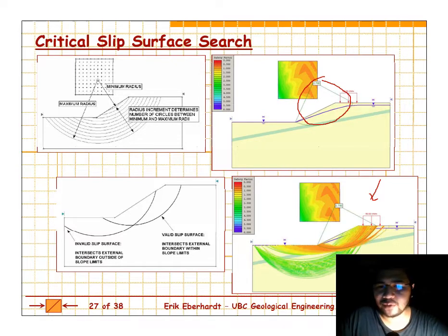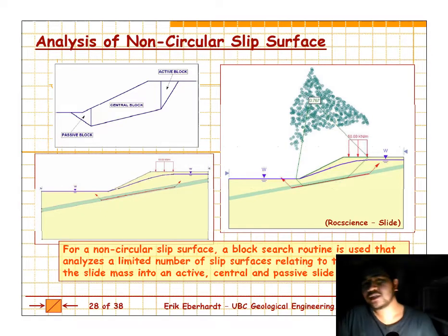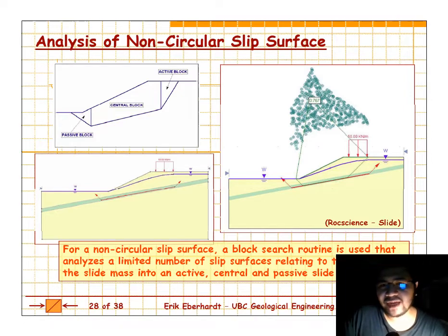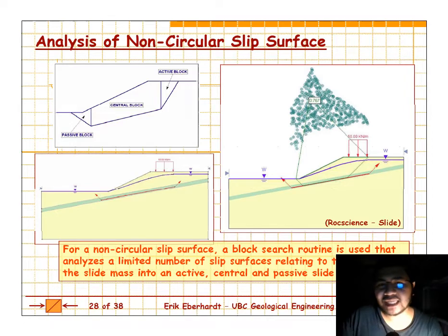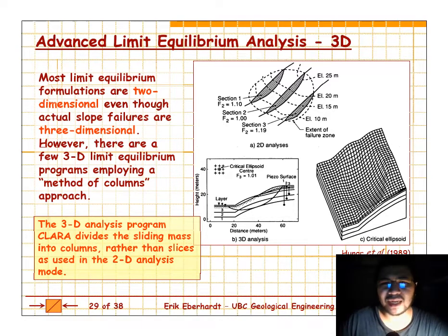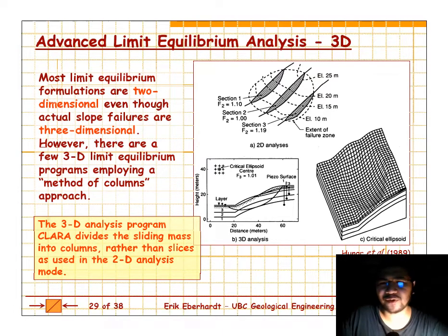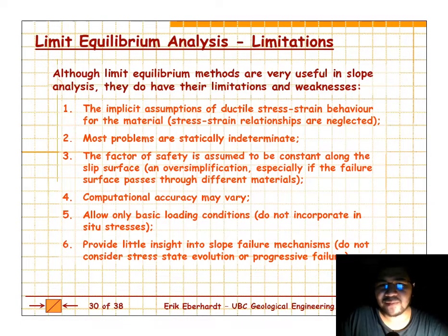You can also do a non-circular surface search, but you must specify it explicitly in the program. This is useful for complex landslides with failure surfaces that may not be circular. There are also advanced 3D limit equilibrium methods, but 2D is really widely used and sufficient for most purposes — unless you're doing cutting-edge research or have a very large budget.